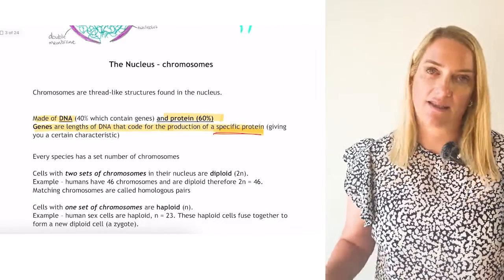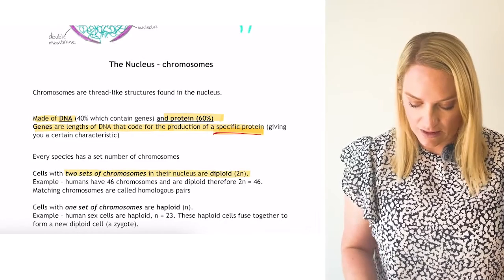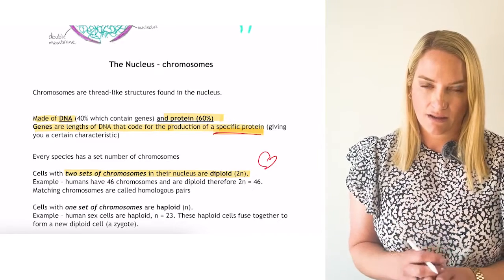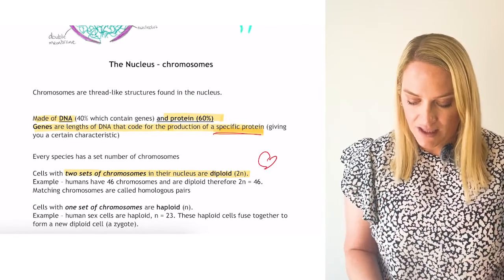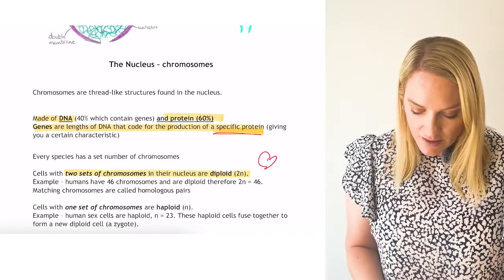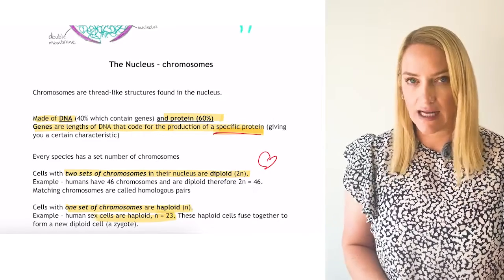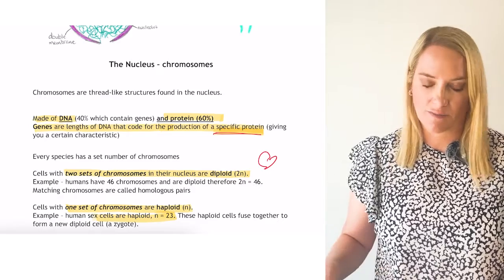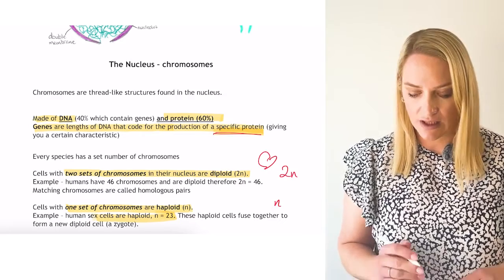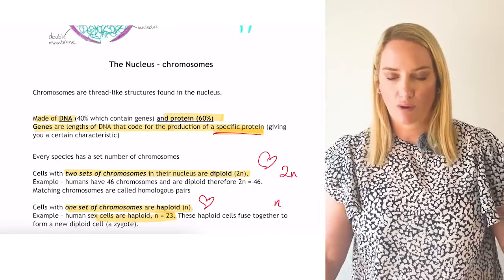Every species has a set number of chromosomes. Cells that have two sets of chromosomes are diploid — you need to know that definition. Your body cells, or somatic cells, are diploid. Humans have 46 chromosomes and are diploid, except for gametes. Haploid means one set of chromosomes — your gametes have 23 chromosomes. Diploid is 2n; haploid is n.